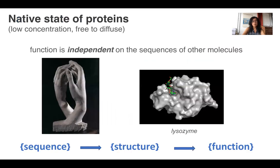When we think about proteins, we mostly consider them in their native states — when they are present at low concentrations, where they are relatively free to diffuse. Consequently, their functions are independent of the sequences of other molecules. So we may put forward a deterministic relationship between intrinsic sequence properties of proteins and their biological functionalities.